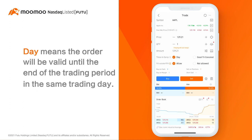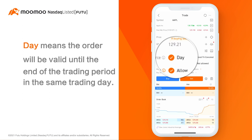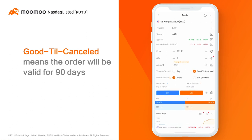You are required to specify the time in force to determine how long your order will be valid in the marketplace. By default, the time in force is set to day. Day means the order will be valid until the end of the trading period in the same trading day. If you set it to good till cancel, your order will be valid for 90 days until it's fully filled or canceled.